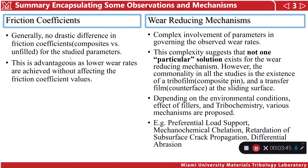We also saw different mechanisms. For example, preferential load support — this mechanism was suggested by a 1981 paper by Tanaka. Then we looked at mechanochemical gelation, which was suggested by a paper written by Catherine et al. We looked at papers which talked about retardation of subsurface crack propagation, and we looked at differential abrasion of the filler — specifically how filler sizes are involved in the abrasiveness of the transfer film. There are so many proposed mechanisms all involved in the improvement of wear rates, but again there is no one solution and a lot more research must be done to understand how these different solutions are related to each other.